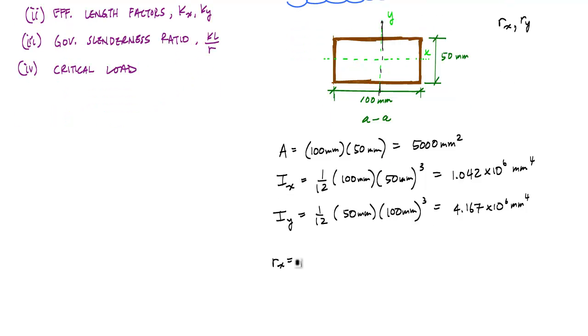This Rx is equal to the square root of ix over a, which if you go ahead and substitute, this will come out to 14.43 millimeters. And then Ry, the radius of gyration about the y, 28.87 millimeters.